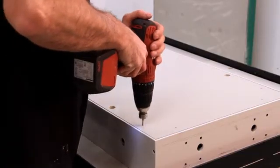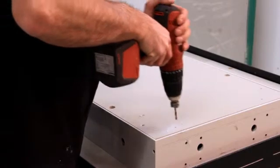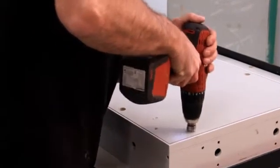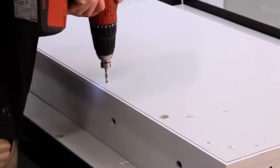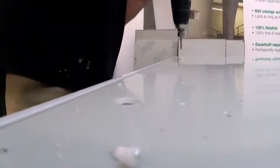Holes are then drilled into the Alcus panel and the formwork for riveting. To ensure the rivet is flush with the Alcus, it's countersunk using a 120 degree countersink.